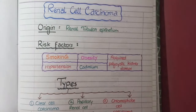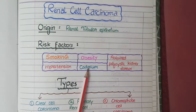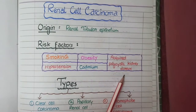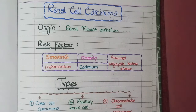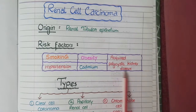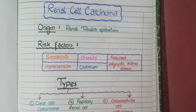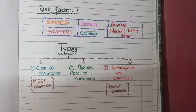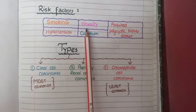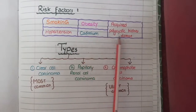The fourth risk factor is exposure to the metal cadmium. And the last risk factor is acquired polycystic kidney disease, which commonly occurs in patients who are on chronic dialysis. Those patients on chronic dialysis have a tendency to develop multiple cysts on the kidney, and along with the development of cysts, they may develop renal cell carcinomas. So the risk factors are smoking, obesity, hypertension, cadmium exposure, and acquired polycystic kidney disease.